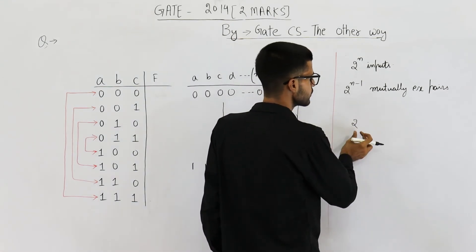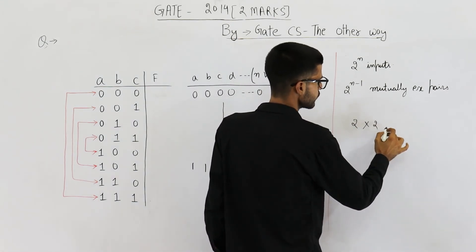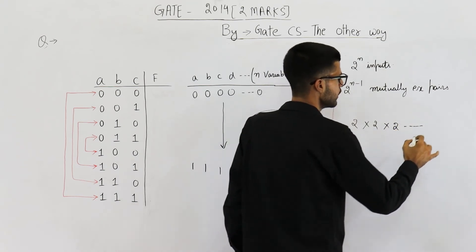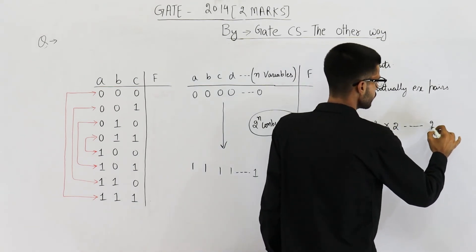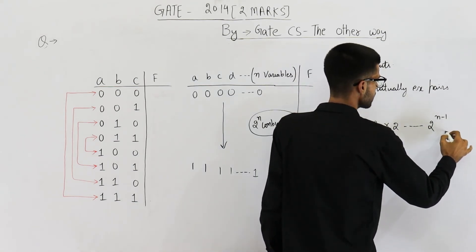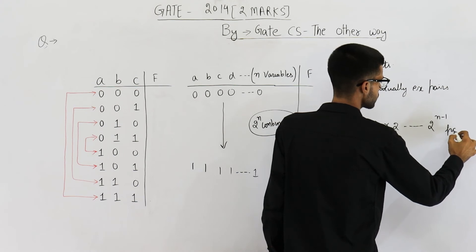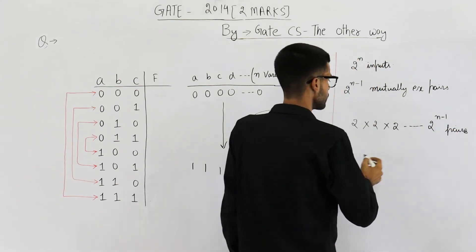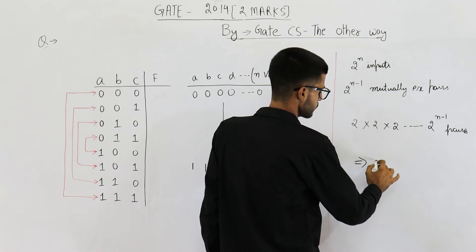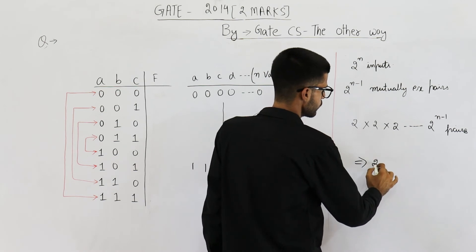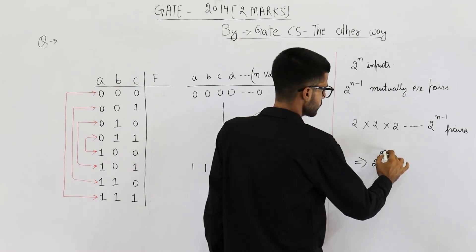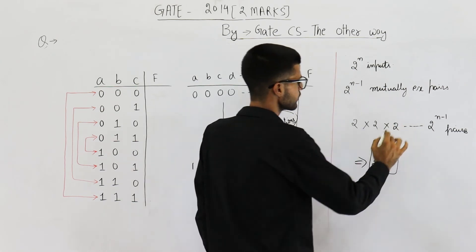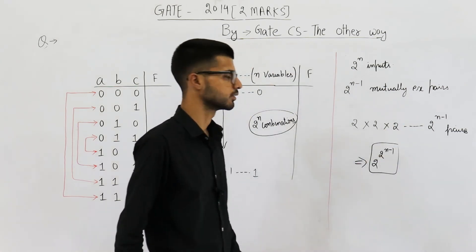There are two methods for the first pair, two methods for the second, and similarly two methods for each of the 2^(n−1) pairs. So the total number of self-dual functions comes out to be 2 raised to the power (2 raised to the power n minus 1). This is your answer.